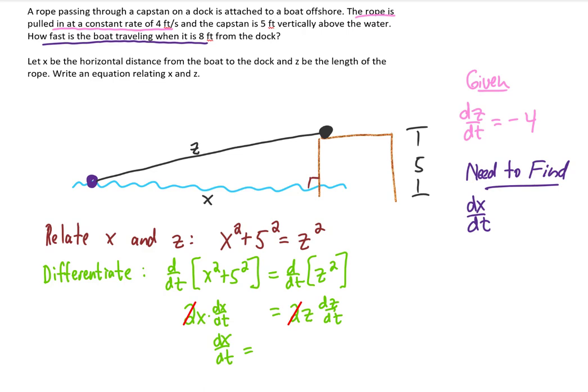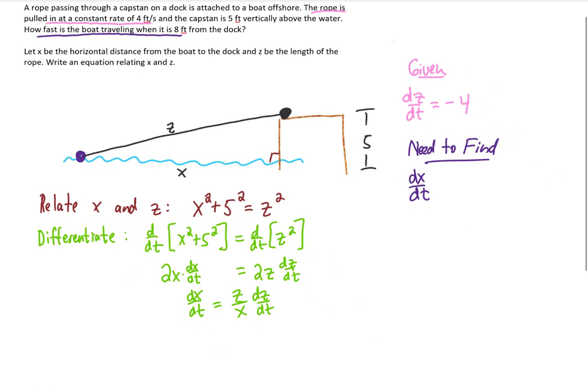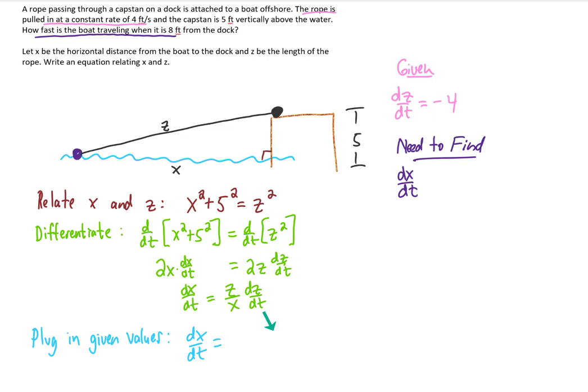I'm going to zoom out and make just a little bit of room. And we're going to do our final step here. We're going to plug in the given values. dx/dt is what we're looking for. We knew earlier that dz/dt was negative 4. We're told that the boat is 8 feet from the dock. And I think what that means is that the horizontal distance x is 8. But I'm going to plug x equals 8 in down here.